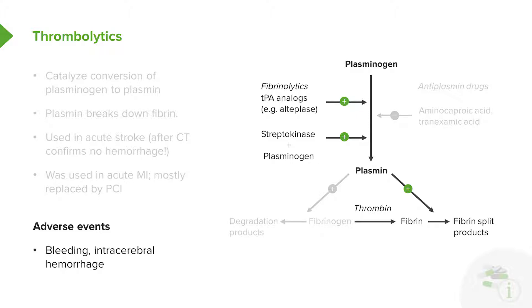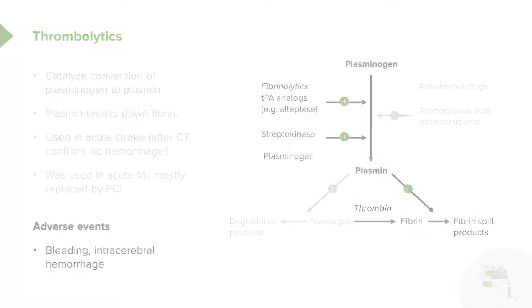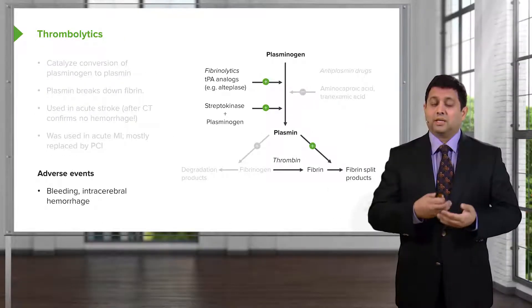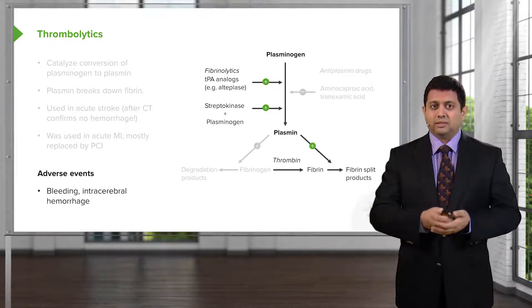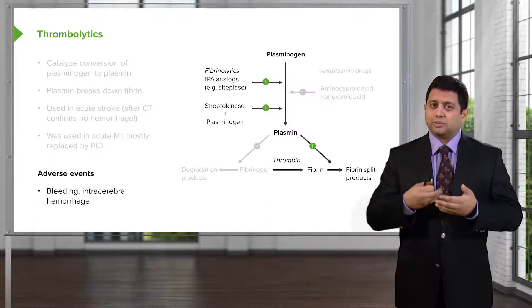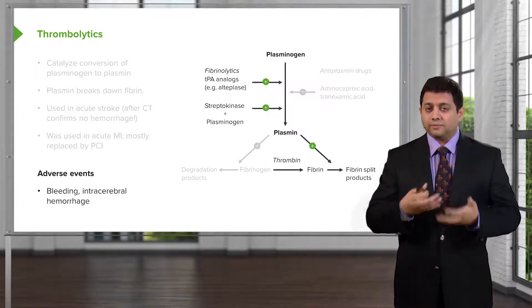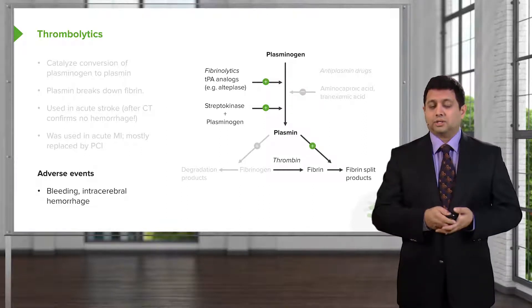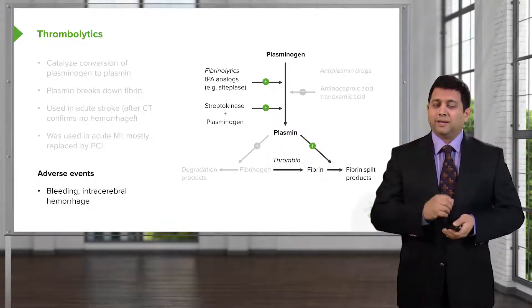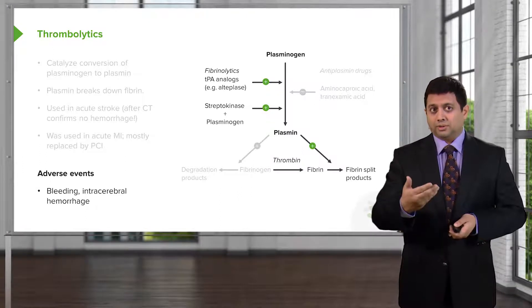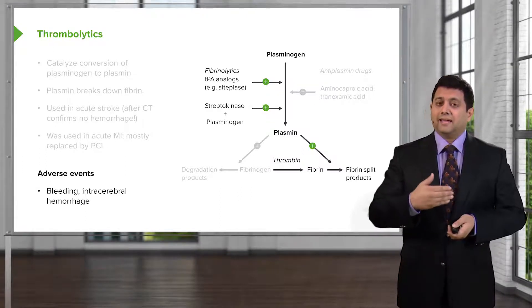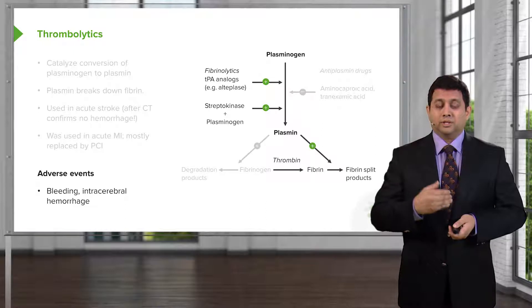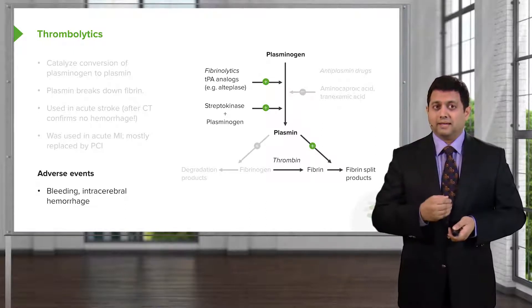I'm going to give you a clinical pearl that won't be useful on your exam, but it's going to be useful in the real world. When you have a person who has an acute intracerebral hemorrhage, they will tell you somebody hit me in the back of the head with a baseball bat. They are so emphatic about how swiftly the headache came on and how severe it is that it's quite shocking. I had a patient when I was a medical student who was put on a thrombolytic, and they ended up developing an intracerebral hemorrhage. She told me it was as if somebody came and hit her on the back of the head.